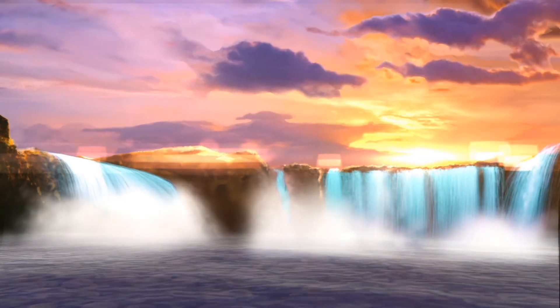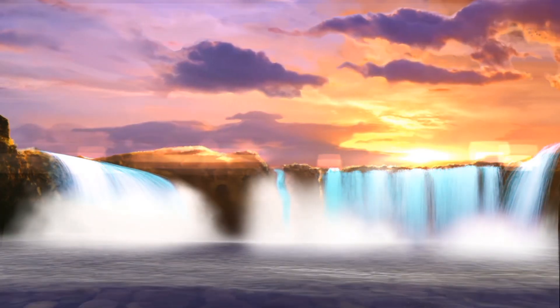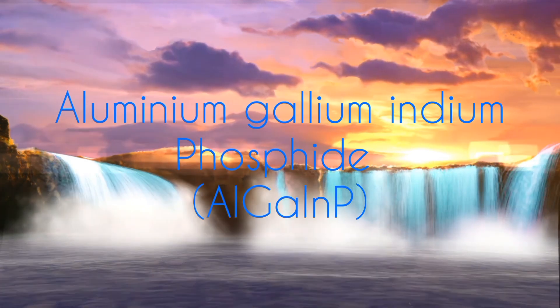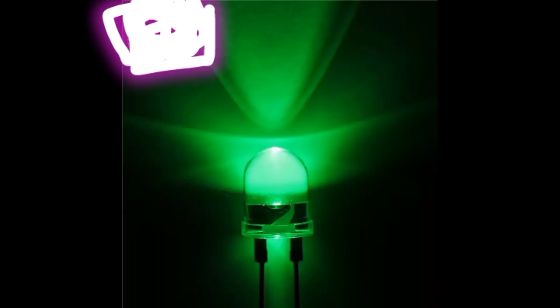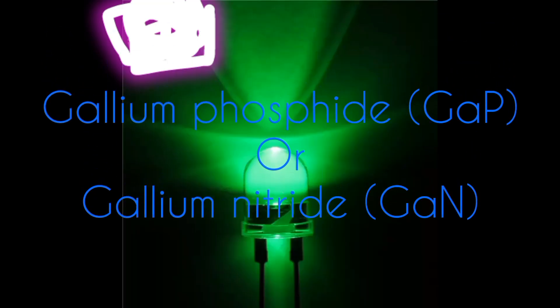With further experiments by scientists, red LED is produced by alloy of aluminum gallium indium phosphide. Then green light was achieved by either alloy of gallium phosphide or gallium nitride to emit green light.